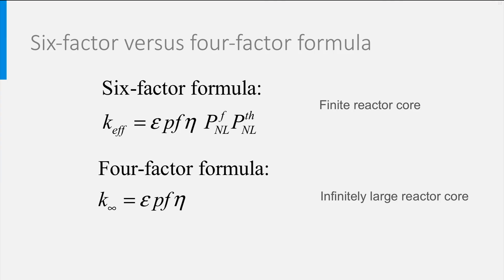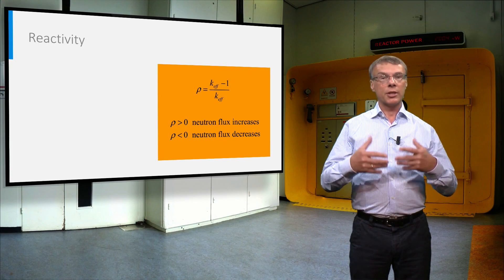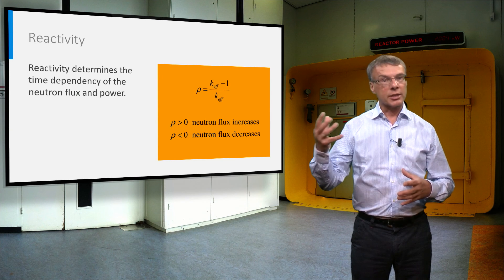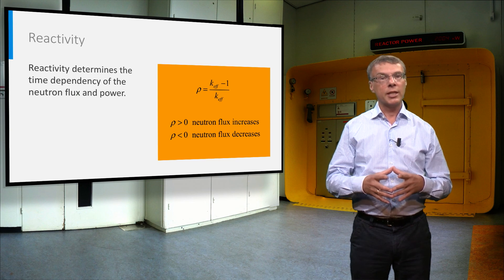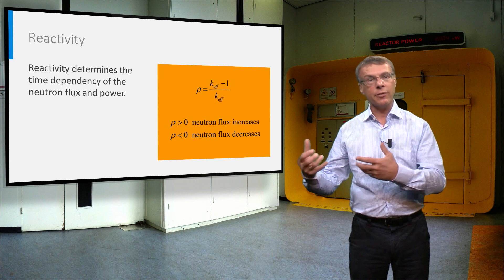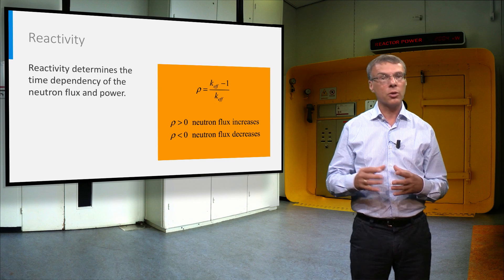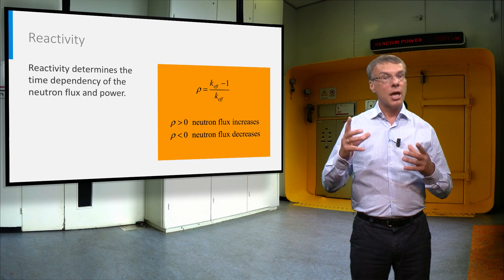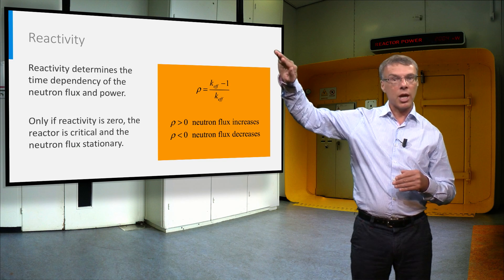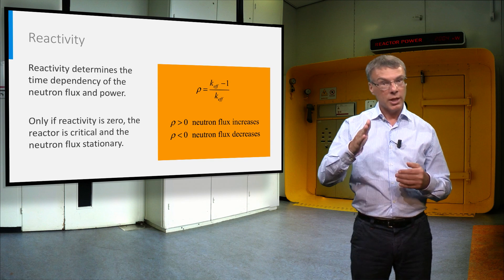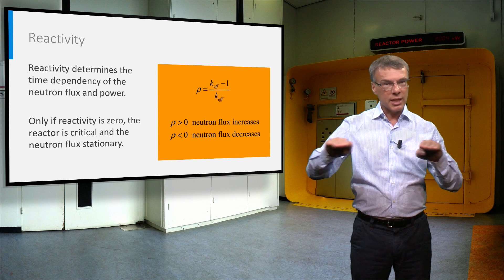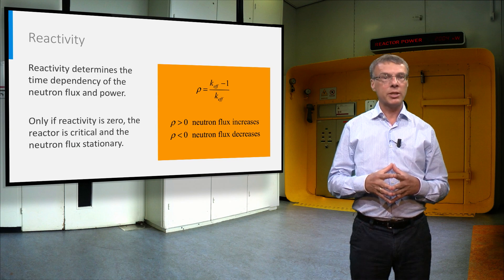From the multiplication factor we can derive another parameter that is closely related, namely reactivity. The reactivity of a nuclear reactor core is defined as a ratio of k-effective minus 1 and k-effective, as shown in the formula on the slide. If reactivity is larger than zero, the neutron flux increases with time. If it is less than zero, it decreases in time. Only if the reactivity is exactly equal to zero, the flux remains stationary.